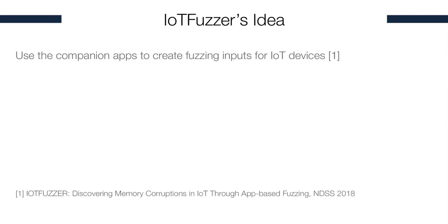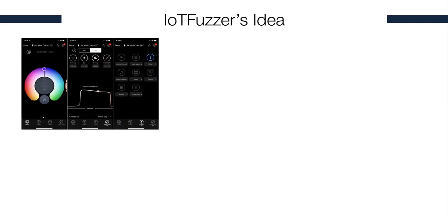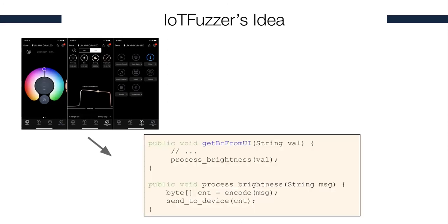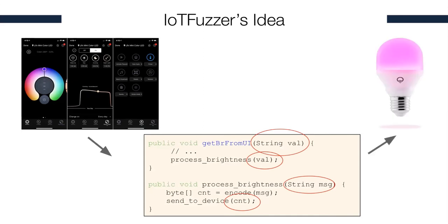However, a recently proposed idea, IoT Fuzzer, makes a novel observation that most of these IoT devices come with a companion app that helps in communicating with these devices. These companion apps usually have a UI that is exposed to users. When users use this UI to modify certain attributes of the IoT device or to control it, these UI actions get translated to messages which the companion app packs into the format expected by the IoT device, and then the message in this required format will be sent to the IoT device.